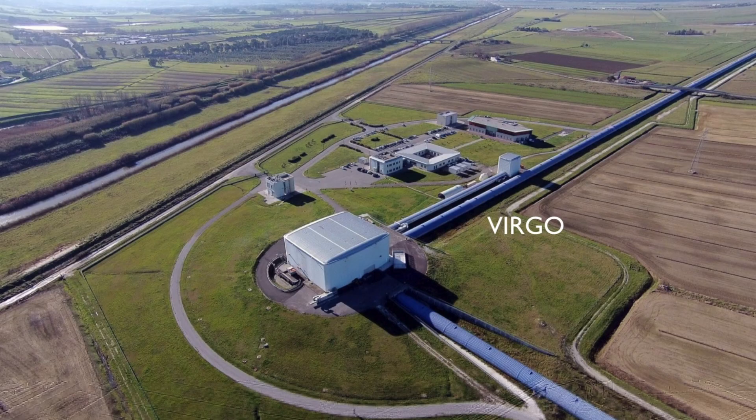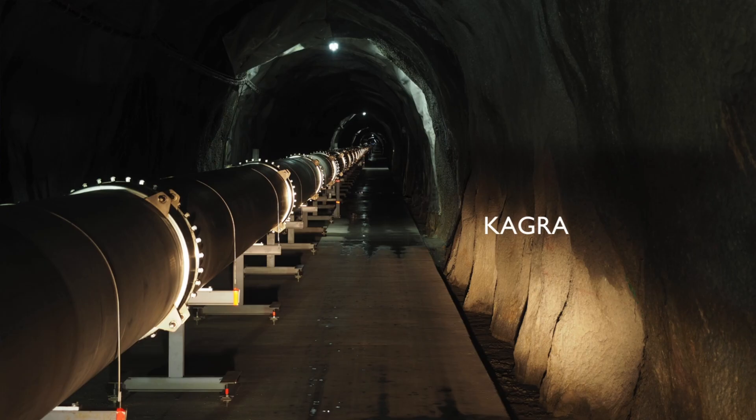The LIGO and VIRGO are now joined by a Japanese system called KAGRA and soon to be joined by the Indian Observatory. These are kilometer-sized interferometers.